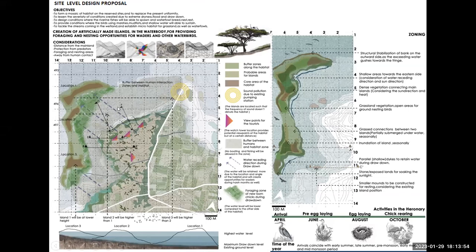Blue arrows indicate the direction of water receding. Structural stabilization of the bank on the outward side is given for the rainy season. Shallow areas towards the eastern side are given considering the direction of sun, as some birds need sun for breeding. Dense vegetation connecting main islands is also given, along with grassland vegetation and open areas for ground nesting birds, grass connections between islands, parallel dikes to retain water during drawdown, and stone-exposed land for soaking sunlight. Smaller mounds are constructed during foresting and island positioning.